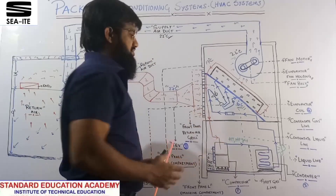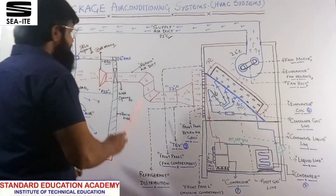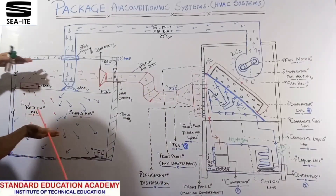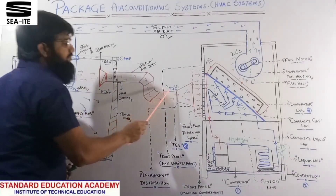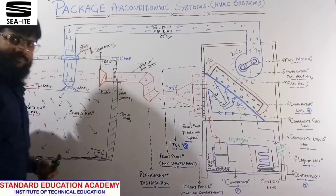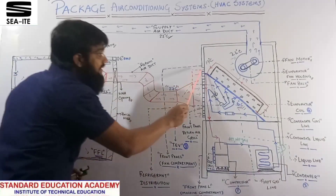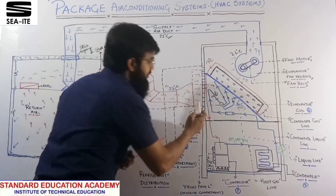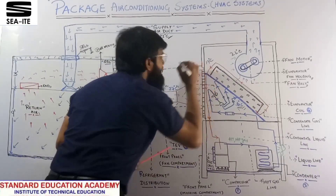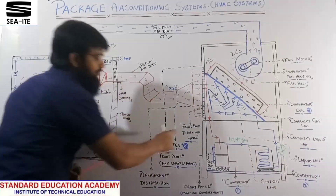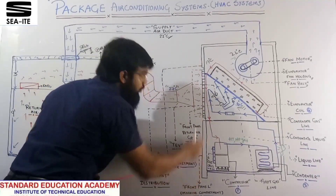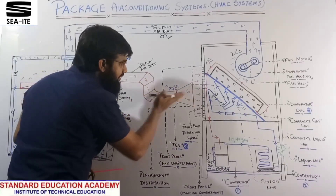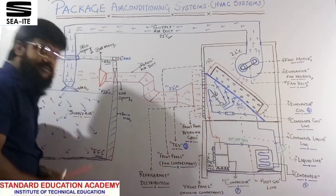Now we will go through the refrigeration cycle. Return air is coming from the space at a rated temperature of 27°C. At your return air grill — this complete front panel section — we are getting return air at a temperature of 27°C.